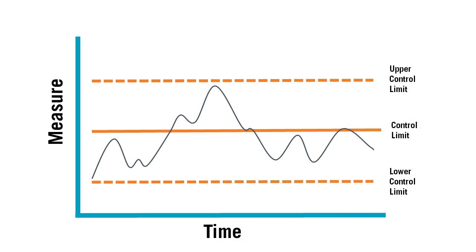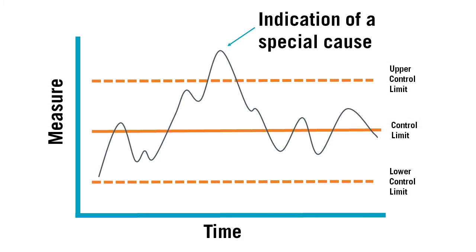Every project needs that theory at the beginning. Sometimes we skip over it and just assume what we're doing will get us from here to there. In industries that are more mature in quality, the very first step in every project is a control chart to ask: is the problem we're facing a common system problem or is it a special cause problem?